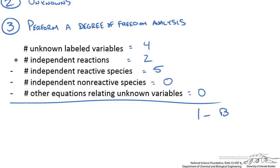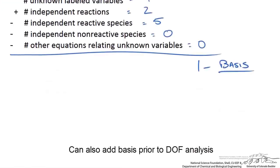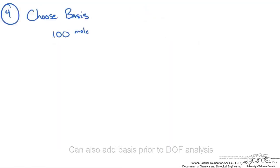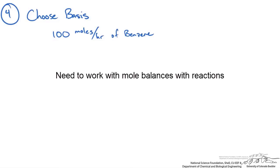In this case, our last degree of freedom is going to be wiped out because we are going to choose a basis. I am going to use 100 moles per hour of benzene entering. It is always an easy one to work with when we have compositions given as percentages or fractions.